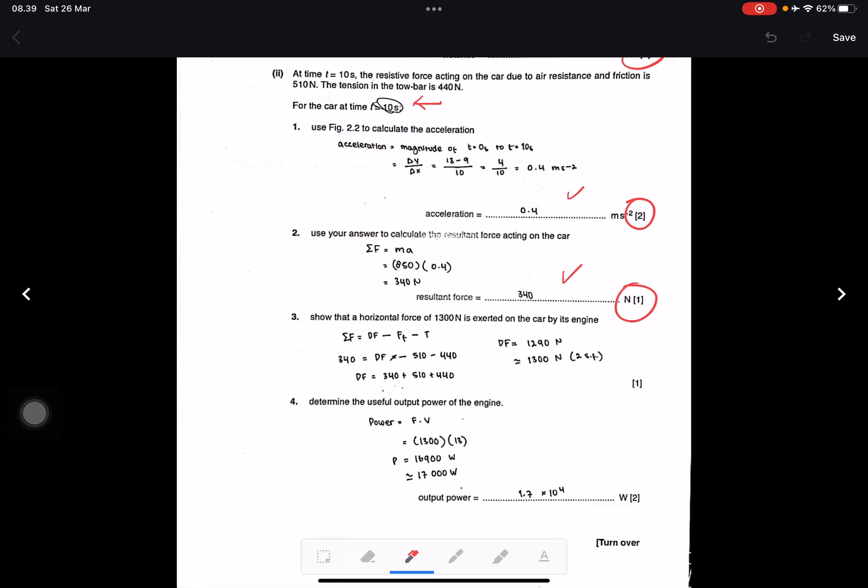The horizontal force of 1300 newtons is exerted on the car by its engine. We use sigma F equals driving force minus frictional force minus tension. Total force equals driving force minus frictional force minus tension. We have total force 340 and tension 440, so we calculate this to become 1290, or in two significant figures 1300 newtons.